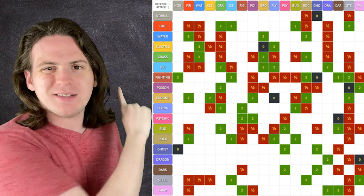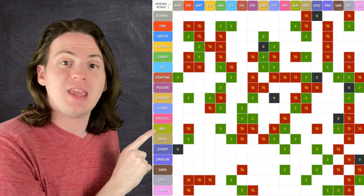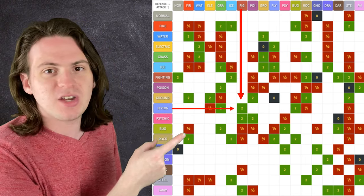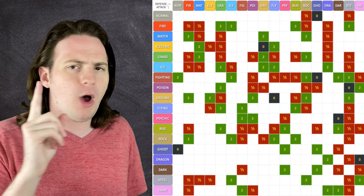But basically, across the top, we've got the type of the defending Pokemon. Down the side, we have the type of the move being used against them. Just find the intersection, and boom, you got yourself a multiplier for the move, simple as that. Only, there's one problem.